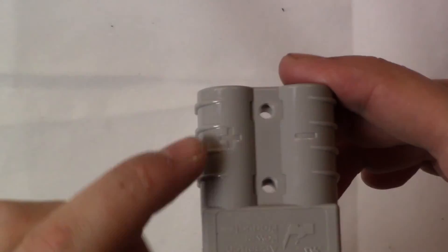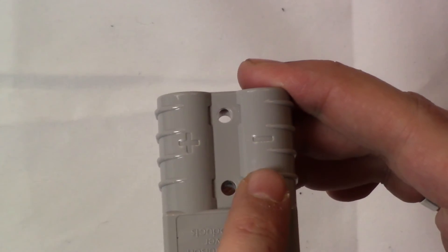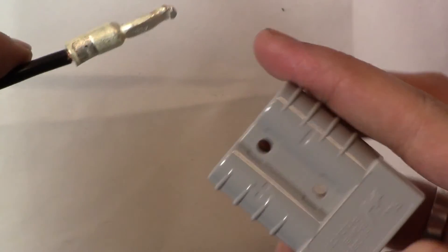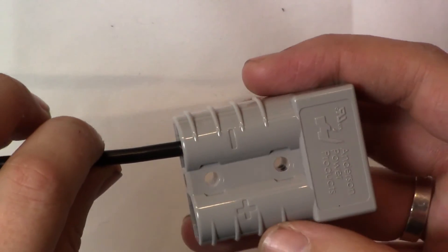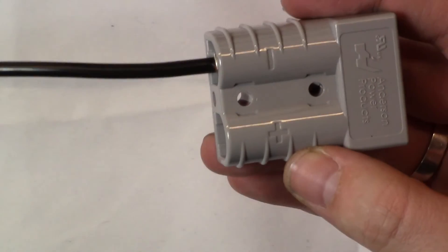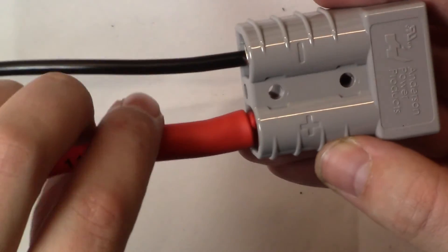With our SB connectors you are going to want to make sure that you get your positive and your negative cables in the right slot. All you have to do to insert your terminals are push them in.